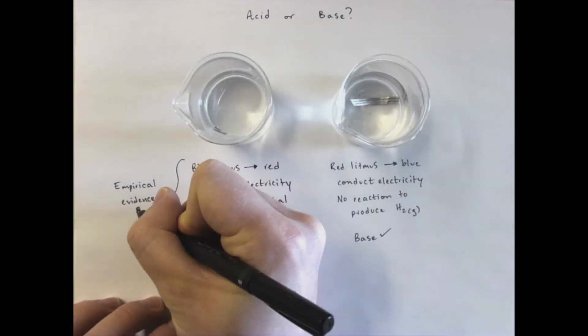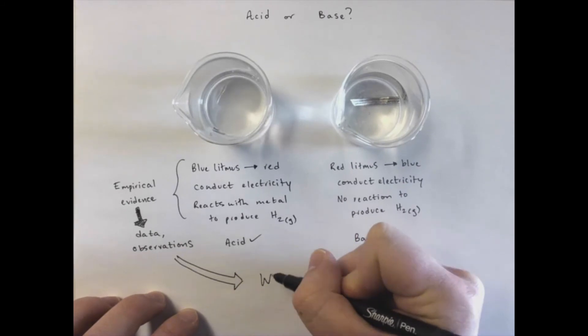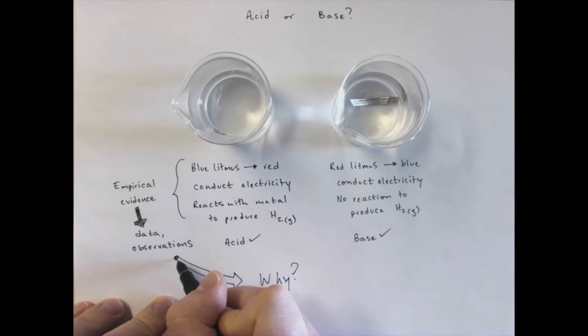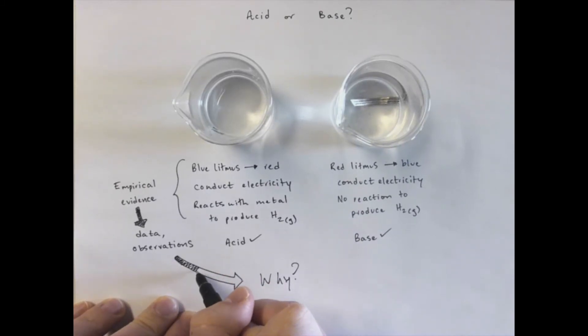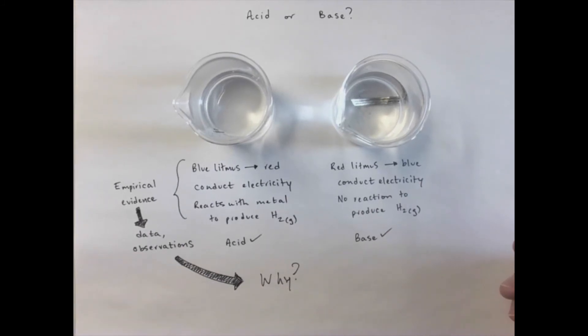We often have to ask ourselves the question of why. So why is it that acids react with metals to produce hydrogen gas, and bases don't? Why is it that acids turn blue litmus paper red, and bases do the opposite? And why is it that acids taste sour and bases are bitter? Why is it that bases tend to be kind of slippery?